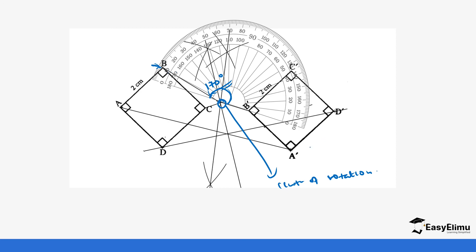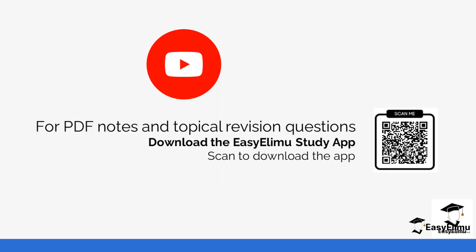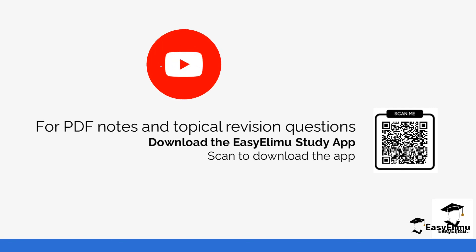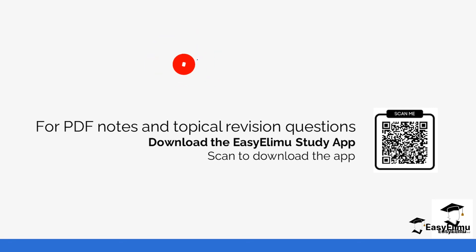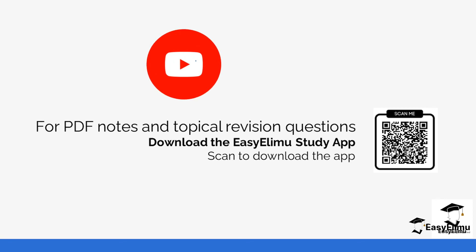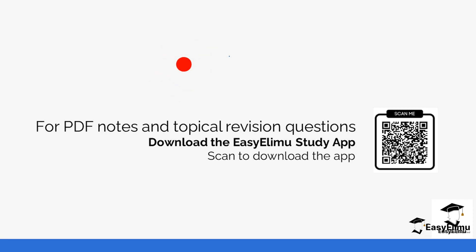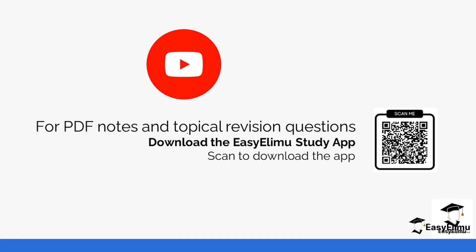That's how you are able to get the center and the angle of rotation when given the image and the object. This mainly applies when the question is not on the Cartesian plane, but the same method also applies even on the Cartesian plane. You can find more revision questions on the app to practice identifying the center and angle of rotation. See you in the next lesson.